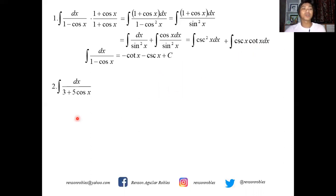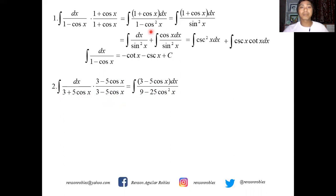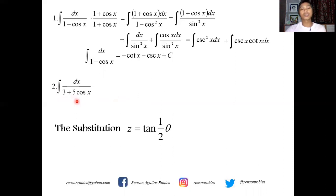Now what if we want to integrate dx over 3 plus 5 cosine x? Examples 1 and 2 are of the same kind — they differ in that 1 becomes 3 and there is a coefficient of 5 for cosine. Applying the conjugate approach, the denominator becomes 9 minus 25 cosine squared x. However, there is no direct trigonometric identity to simplify this, so we can no longer apply the same principle. The brilliant idea here is to use the substitution z equals tangent of half theta.